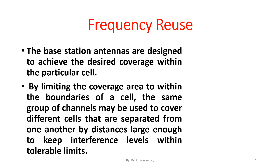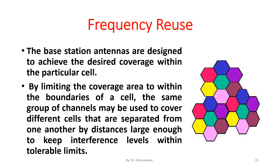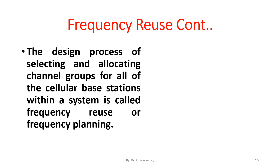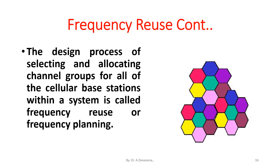By limiting the coverage area within the boundaries of a cell, the same group of channels may be used to cover different cells that are separated from one another by a distance large enough to keep interference levels within tolerance limits. The design process of selecting and allocating channel groups for all cellular base stations within the system is called frequency reuse or frequency planning.